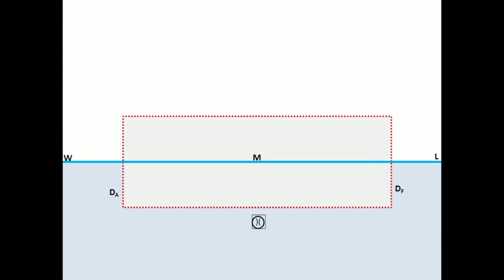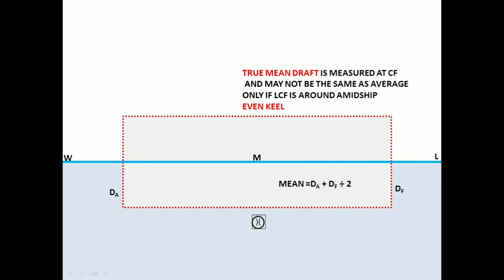Let us figure out what the true mean draft is, because in all questions you will have to refer to your hydrostatic tables, and this is an important step. Now, here is a waterline and a ship — it's a box shape I am showing you. This is midships, the middle of the ship. Here are the drafts, forward and aft. Add them and divide by 2 — that's your mean draft. Now, the true mean draft is measured at the center of rotation, not midships, and it may not be the average, as I said. That is only possible if the center of rotation is close to midships or the ship is on even keel.